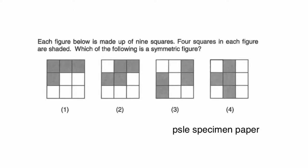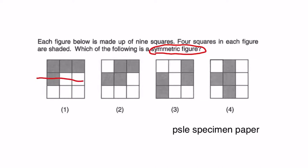Nine squares - four squares in each figure are shaded. Which of the following is a symmetric figure? Keyword: symmetric figure, which means if you are able to find the line of symmetry, it is symmetrical. The first option - we can't draw a vertical line because left and right would not match. We also cannot draw a horizontal line here because the top and bottom do not match. How about diagonal? This and this do not match either. So option one is out.